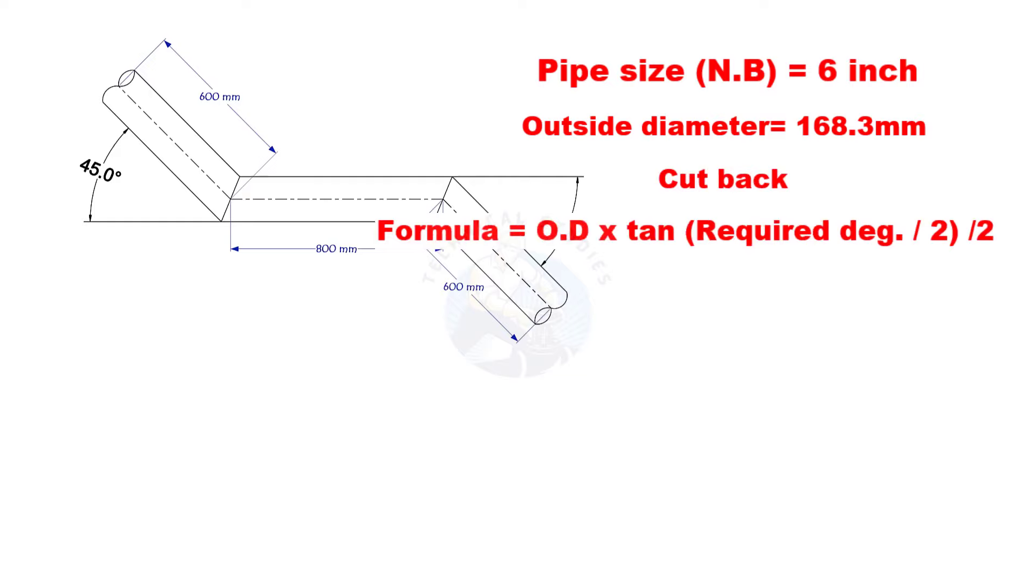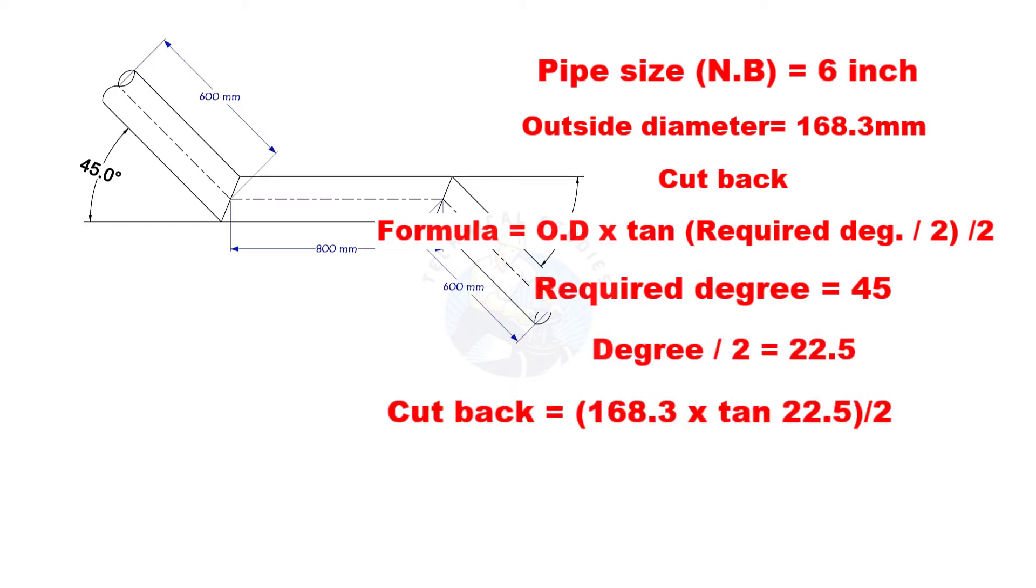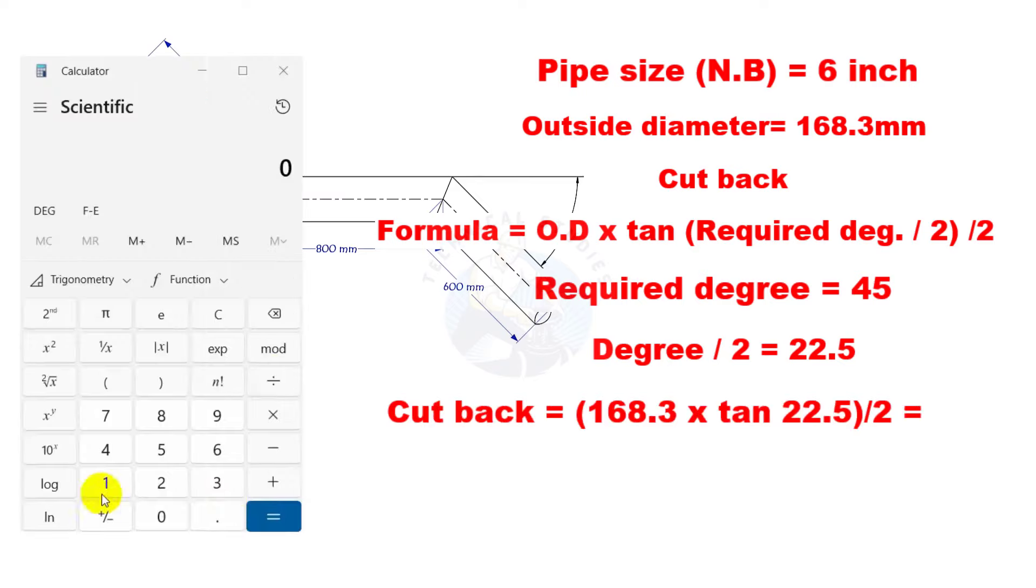Cutback is O.D. multiplied by tan half degree, divided by 2. Here, the required degree is 45. Half of 45 is 22.5. The cutback is nearly 35 millimeters.